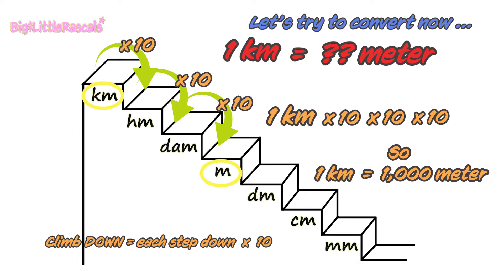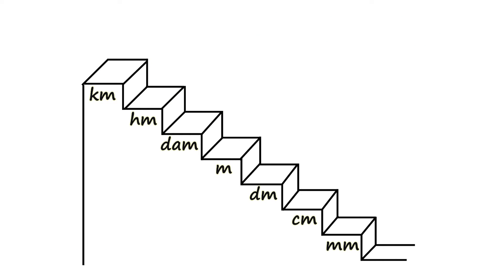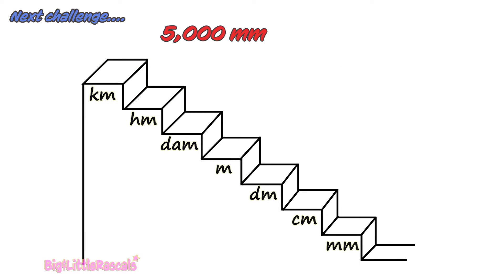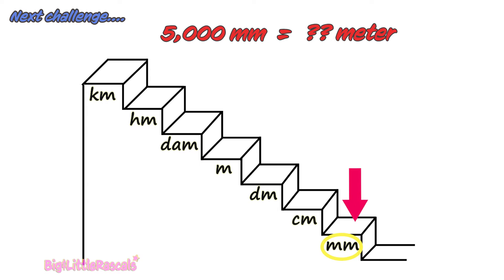So 1 kilometer multiplied by 10, by 10, and by 10 — 1 kilometer equals 1000 meters. Easy, right?